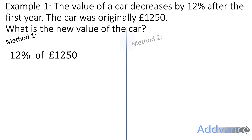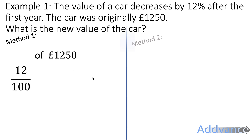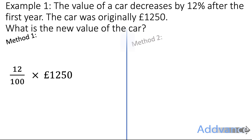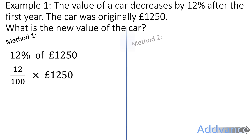So what we're going to do is take 12% of the value of 1250. Method one: we're going to find 12% of 1250. 12% is the same as 12 out of 100. In maths the word 'of' means times, and then we bring the value down. So 12% of 1250 can be done by (12/100) × 1250.